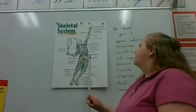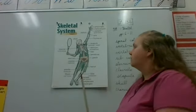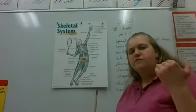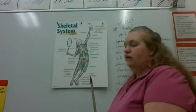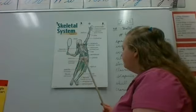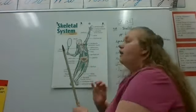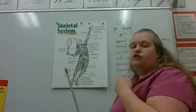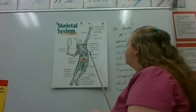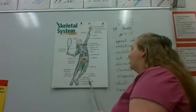We have our rib cage that protects vital organs like our heart and lungs. The clavicle is our collarbone — I've actually broken my collarbone when I was young, fell down a flight of stairs, and it was quite painful for several weeks. We also have the shoulder blade on the back side of your shoulder, which is called your scapula. The sternum is your breastbone, and that's what the ribs all anchor onto on the front.